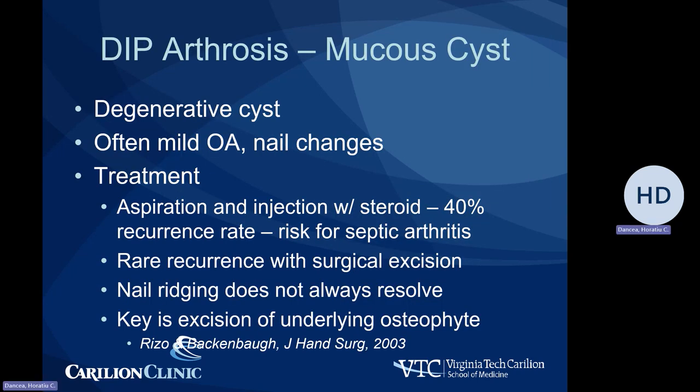A very common presentation of distal interphalangeal joint arthritis is a mucous cyst at that location, which is a degenerative cyst. It often accompanies situations with relatively mild osteoarthritis, small osteophytes, some mild joint narrowing, but no significant arthritic changes. Not uncommonly, there are nail changes like a ridge within the nail due to the presence of the cyst over the germinal matrix at the base of the nail.